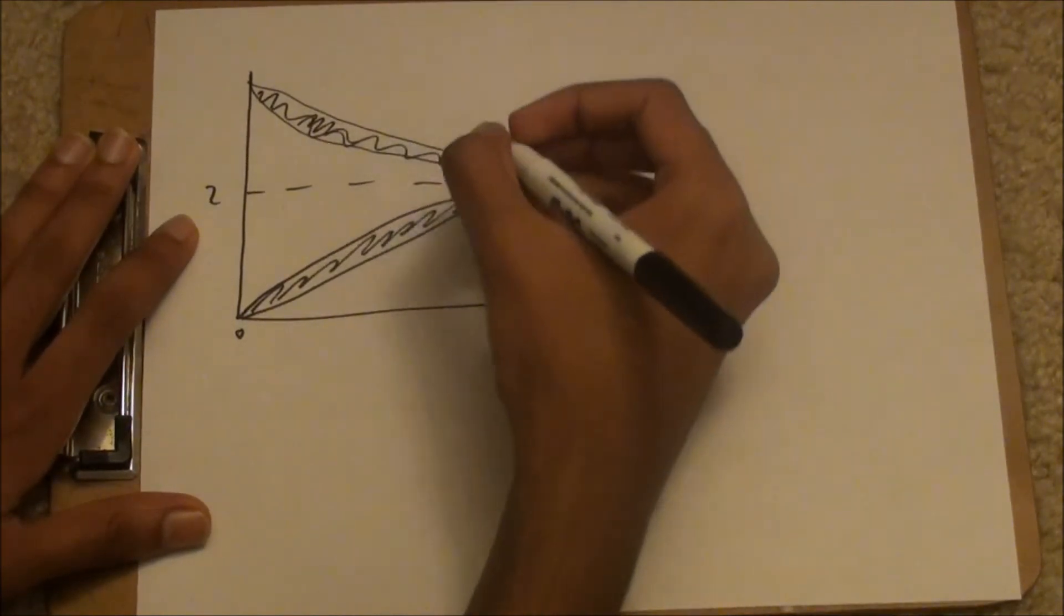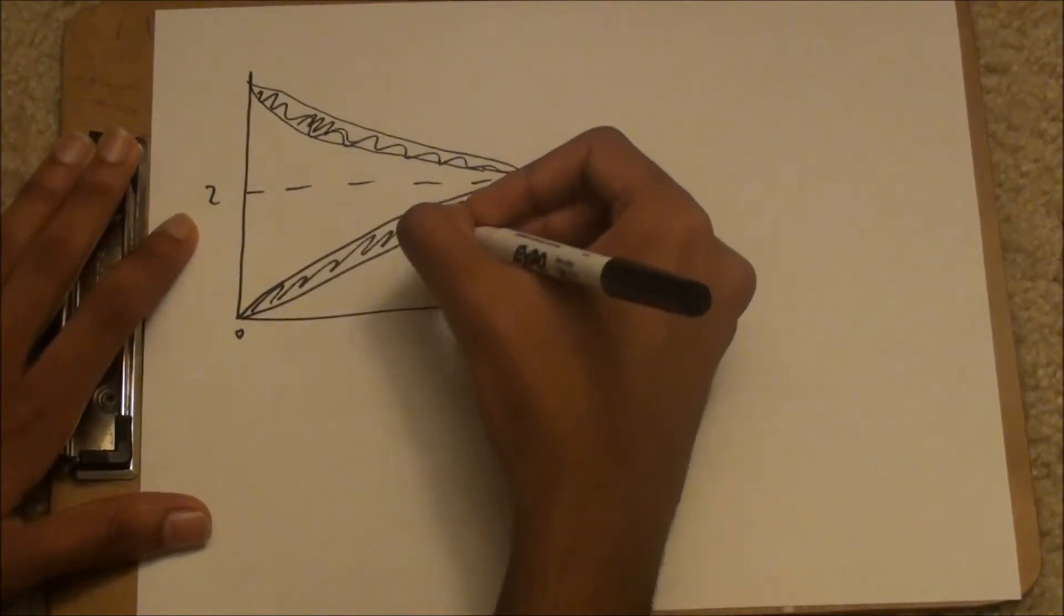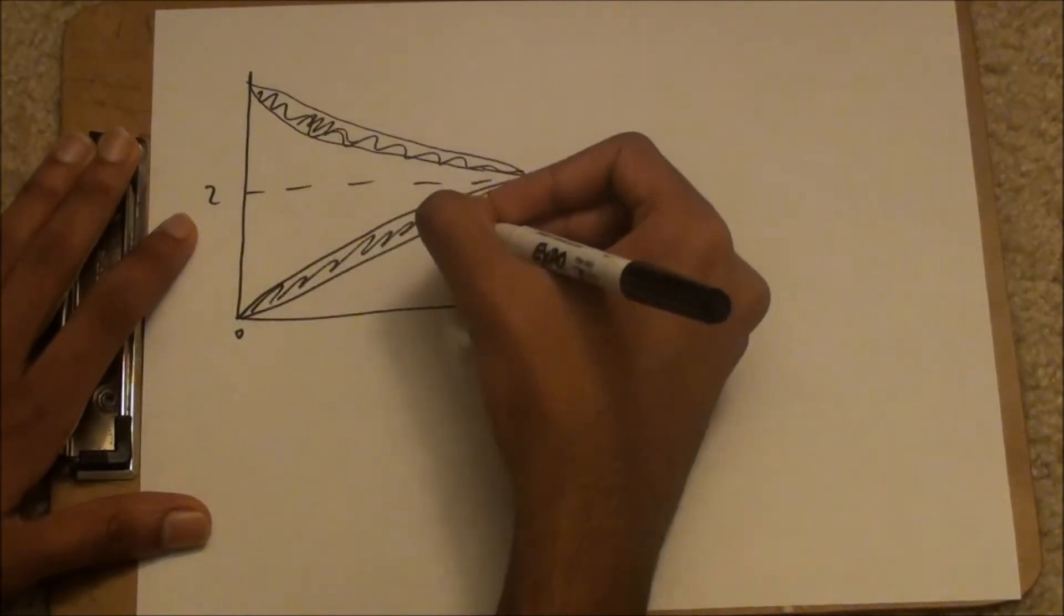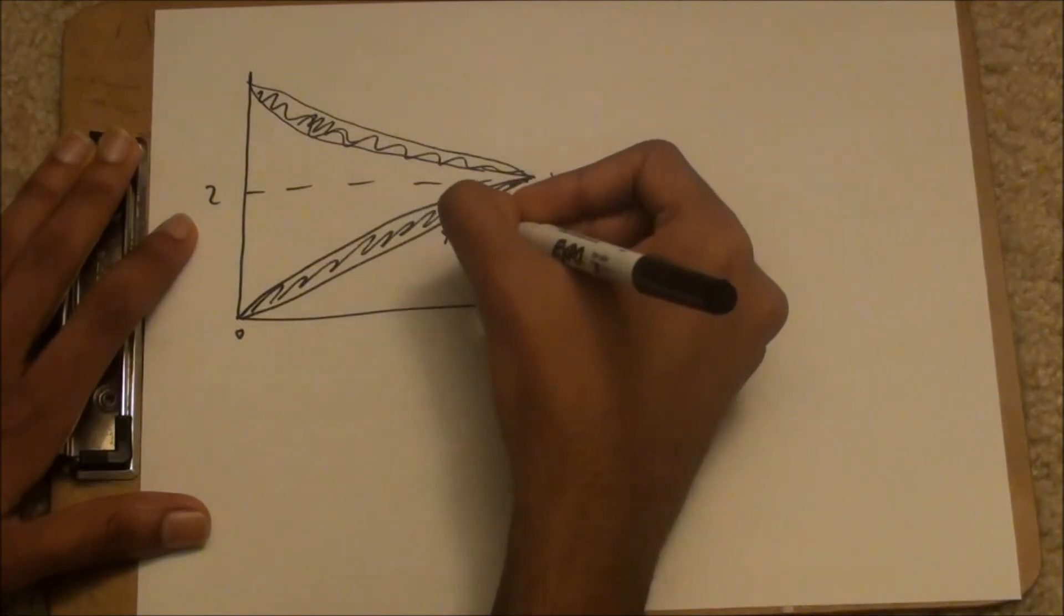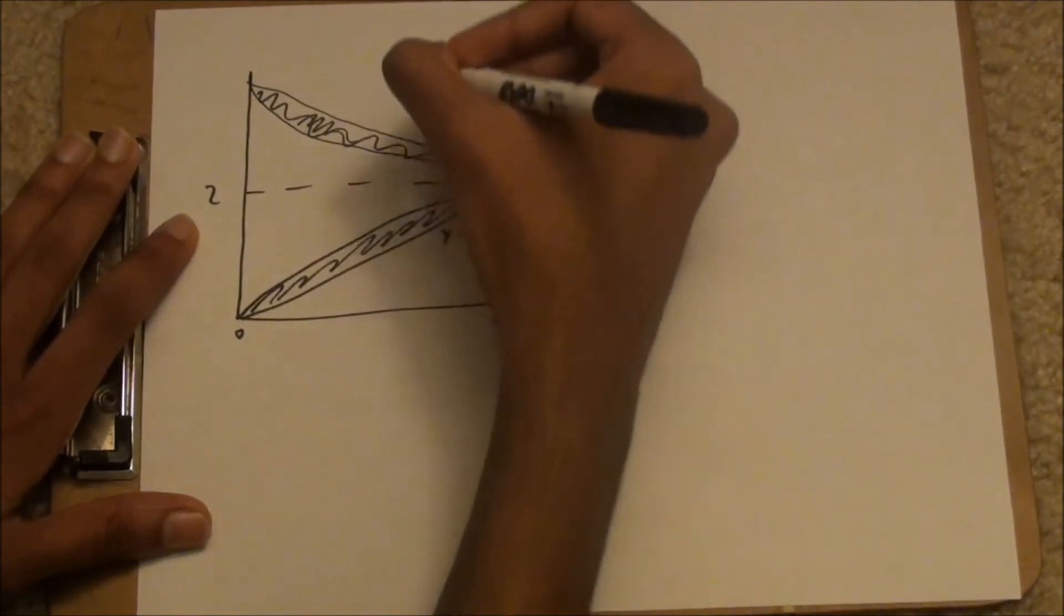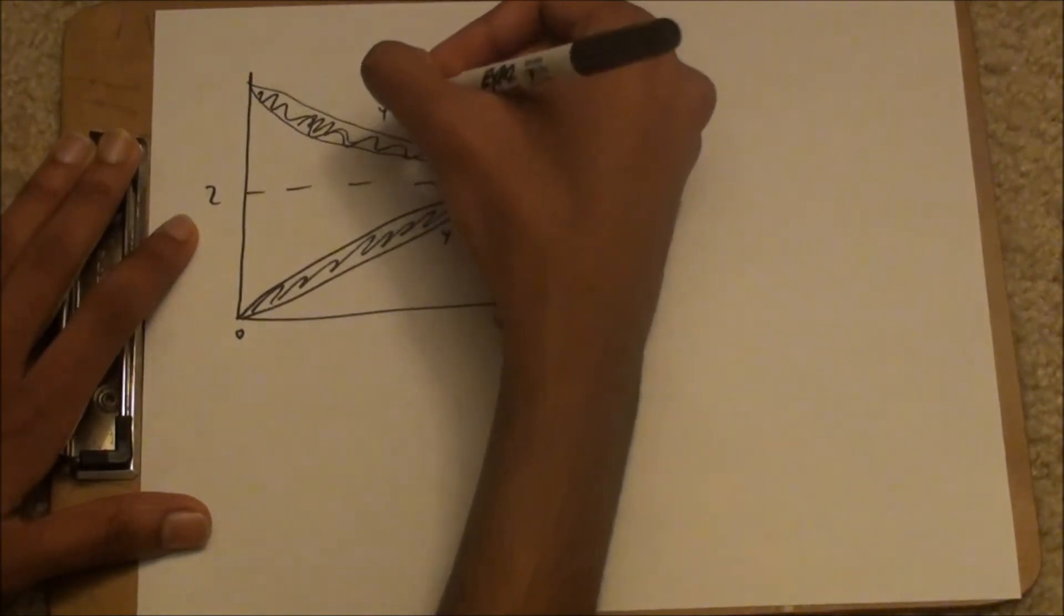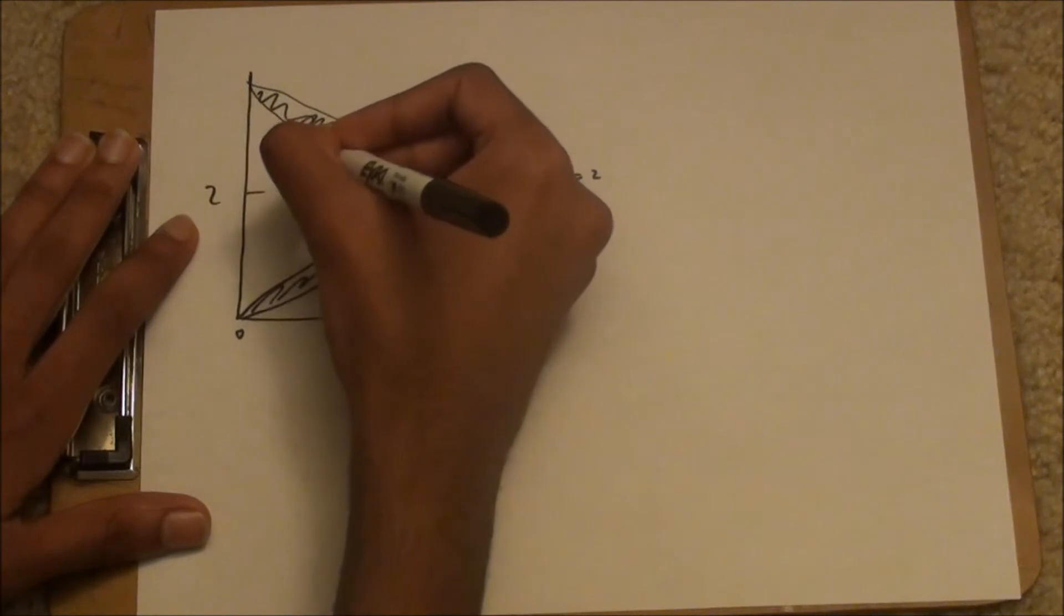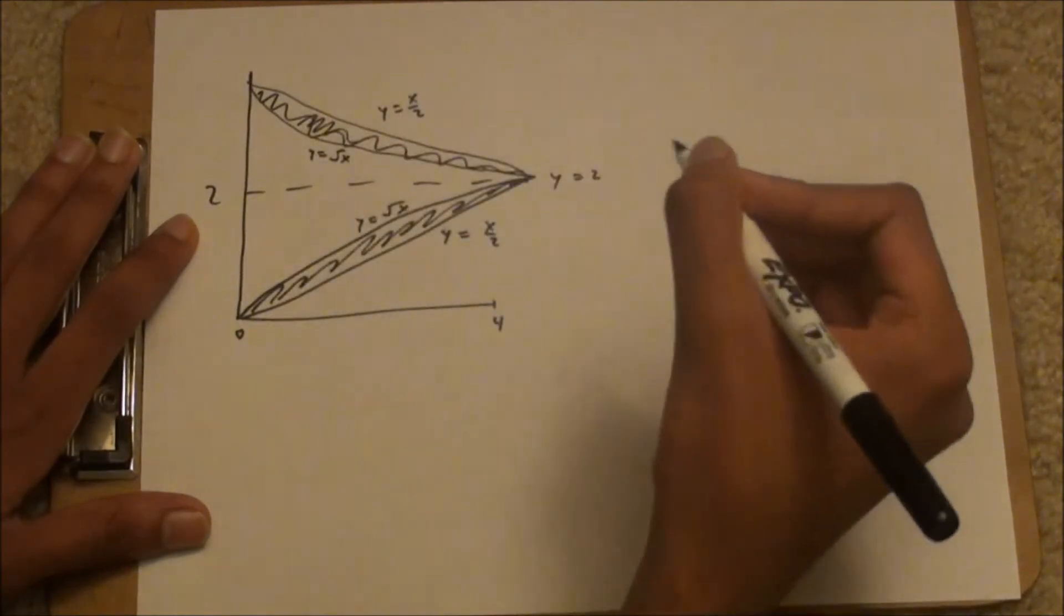We have y equals 2 here, or y equals 2 on the bottom here, y equals x over 2 on the top here, and y equals root x on the top here on the bottom here.